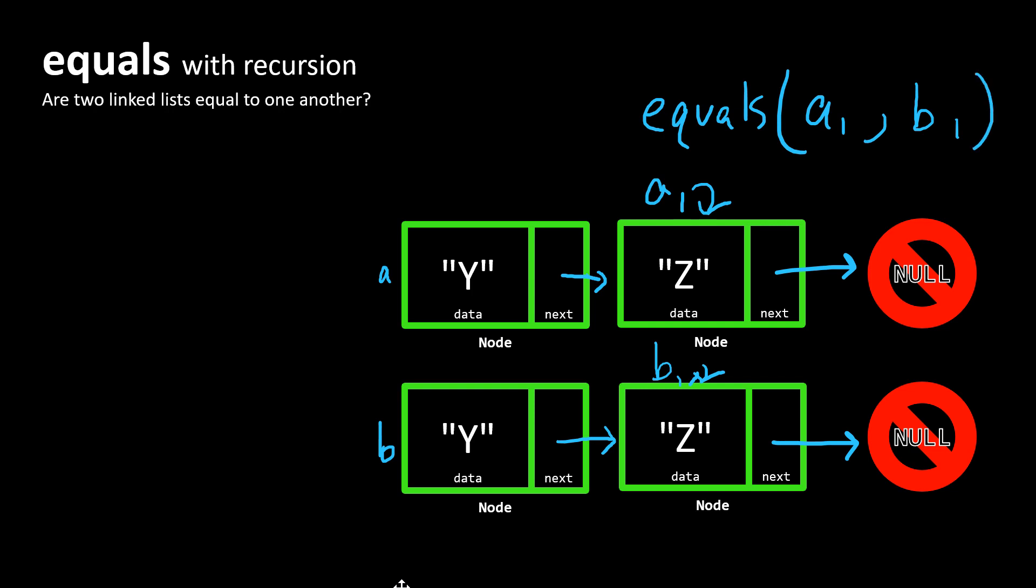If we said equals A sub 1, B sub 1, we expected true to be returned in this case. And to keep my convention with the other videos, let me make this pink.